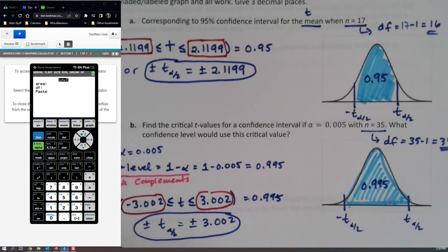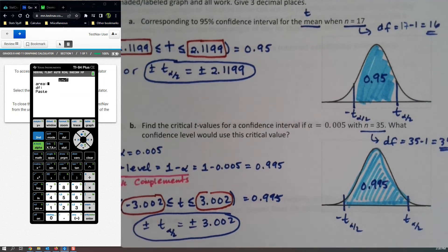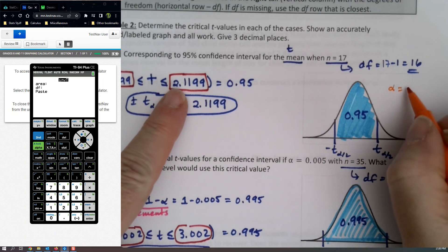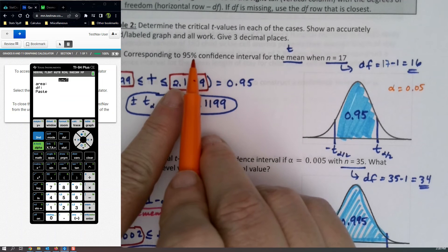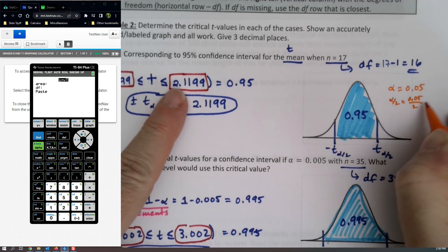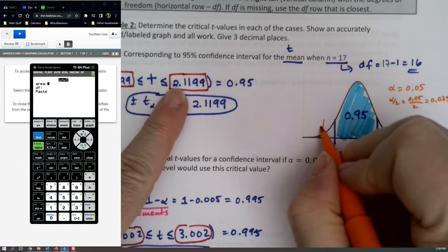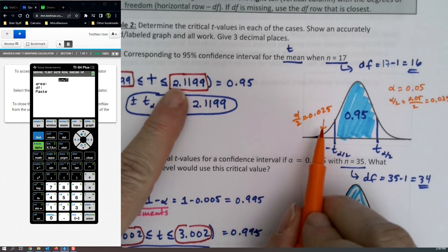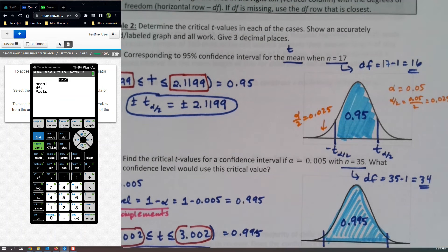So calculator folks, you have your work cut out for you here. So you're going to have to first find alpha over 2. Well, first you have to find alpha. Okay, so alpha is .05, because it's .95 take away from 1, because they're complements of each other. So then alpha over 2 is .05 over 2, which is .025. So this is .025 right there. That's going to be the area that we're going to put in. So we'll say 0.025 on the calculator. Degrees of freedom is 16.